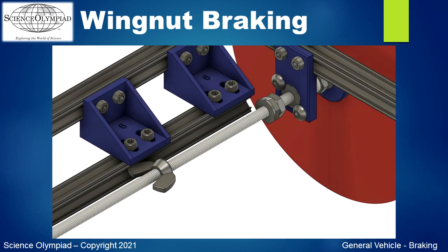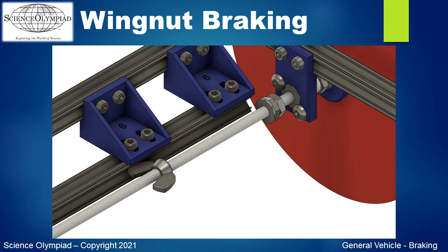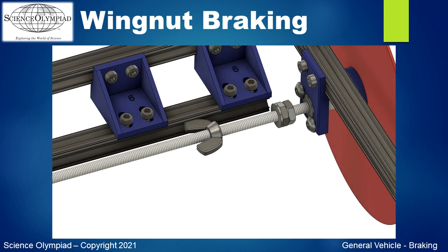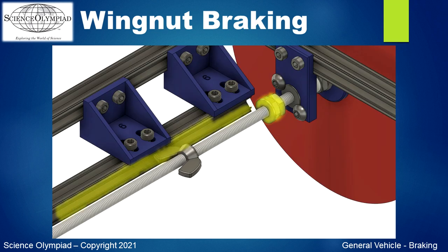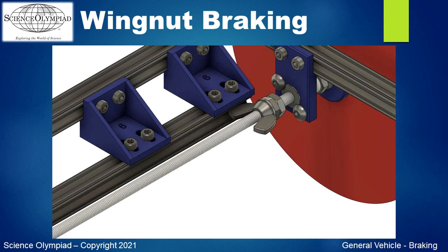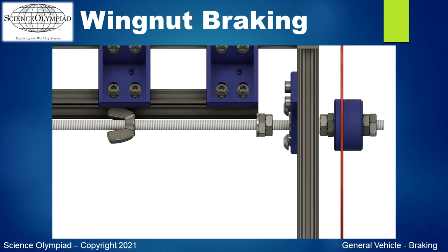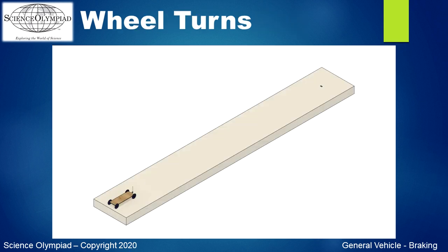Here is shown the common wingnut braking method. Your team's design and components may vary, but there are common parts: a wingnut, a threaded rod for an axle, and a wingnut rotation preventer. This prevents the wingnut from rotating as the wheel and axle spin. As the wheel rotates, the wingnut moves towards a locking point. The combination of the locking point and the wingnut rotation preventer causes the axle and wheel to stop all forward rotation, hence creating a braking operation for the vehicle.